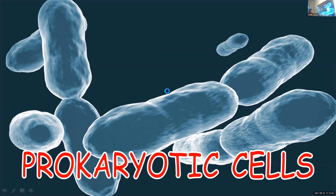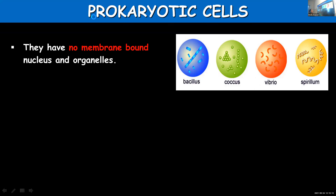Prokaryotic cells are cells that don't have a well-defined nucleus. The nuclear membrane is absent and they just have a nuclear region called the nucleoid. Apart from that, no membrane-bound organelles are present — neither membrane-bound nucleus nor cell organelles.